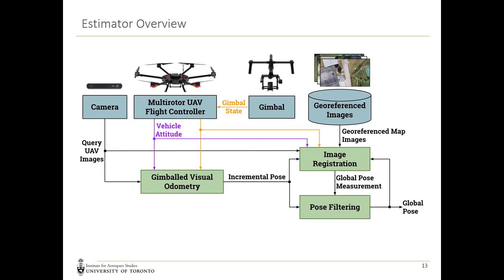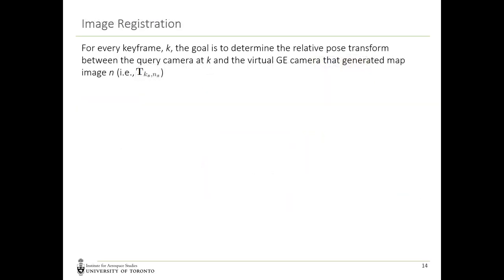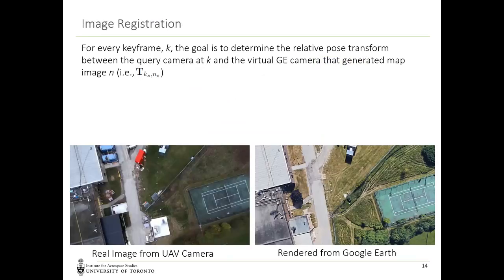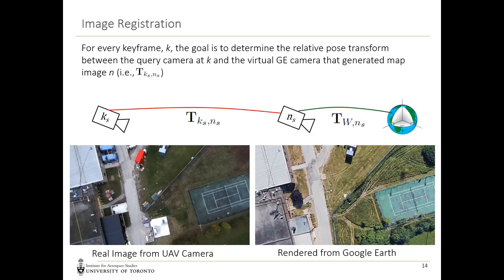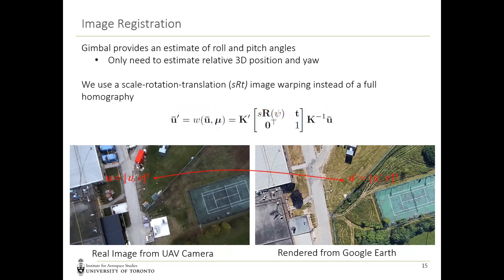The next step is to perform image registration. For every keyframe, we register the real image with a selected Google Earth image. The goal is to determine the relative pose between the UAV camera and the virtual Google Earth camera. Since we know the global pose of the Google Earth camera, we can obtain the global pose of the UAV camera. Because we are using a gimbal to keep the camera pointed in the nadir direction, the gimbal provides roll and pitch estimates, and we only need to estimate 3D position and yaw — allowing us to use an SRT warping instead of a full homography.